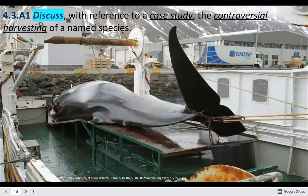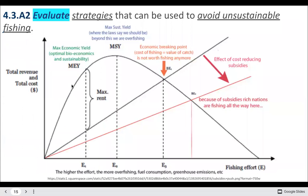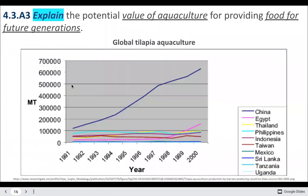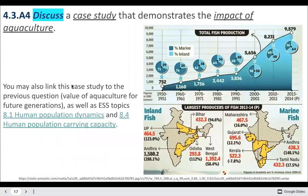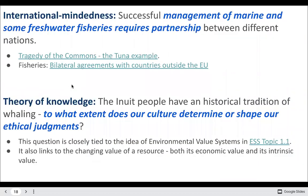Some examples of skills and applications include: discuss a case study referencing the controversial harvesting of a named species; evaluate strategies that can be used to avoid unsustainable fishing; explain the potential value of aquaculture for providing food for future generations; and discuss a case study that demonstrates the impact of aquaculture. There are also connections for international mindedness and theory of knowledge.